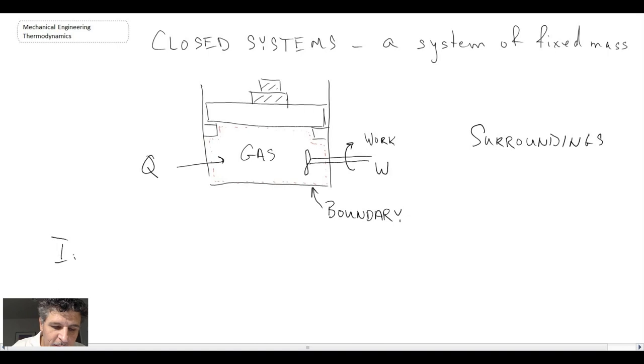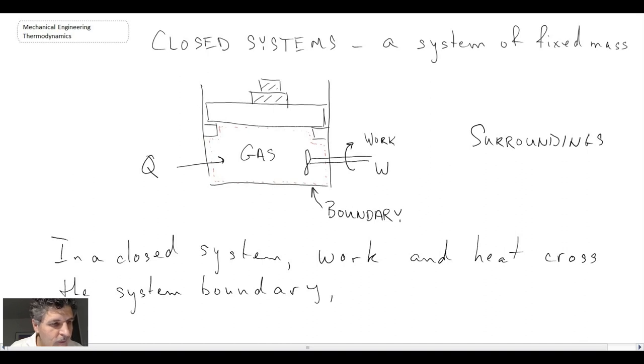So in a closed system, work and heat cross the system boundary. Mass cannot. And that's why we call it a fixed mass system. So that is referred to as being a closed system.